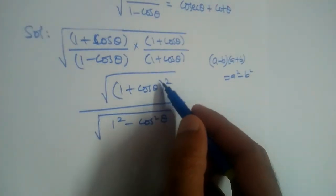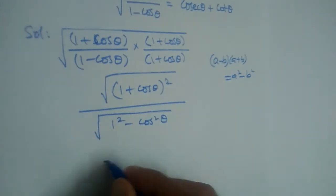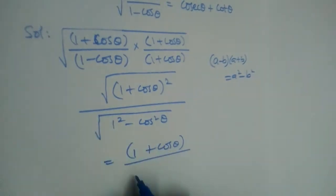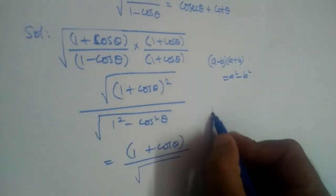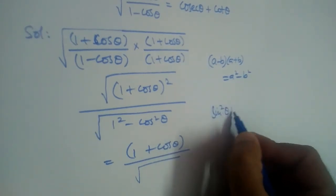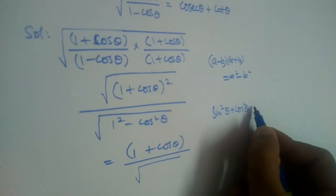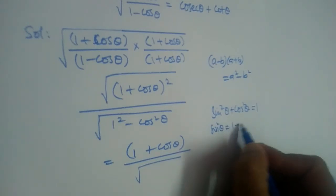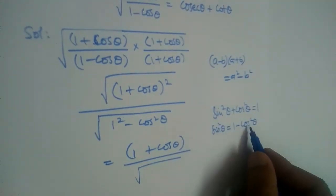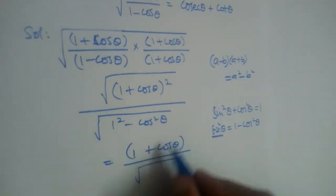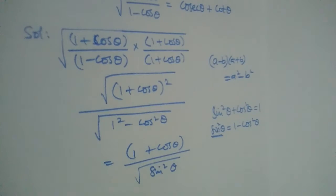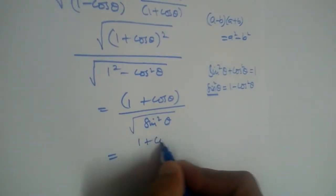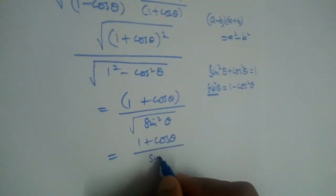1 plus cos whole square root — so the numerator will be 1 plus cos. Now, we have learned an identity: sin squared plus cos squared is equal to 1. So if we rearrange, sin squared is equal to 1 minus cos squared theta. So in place of 1 minus cos squared, we can write sin squared theta in the denominator. And root of sin squared theta is sin theta.